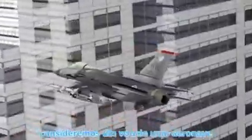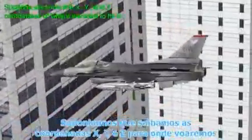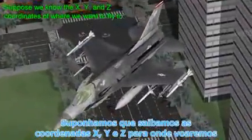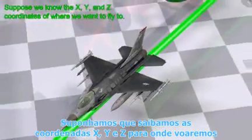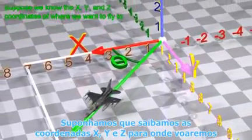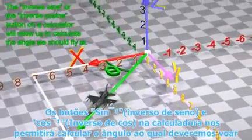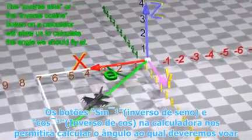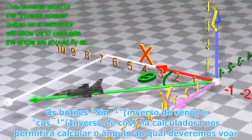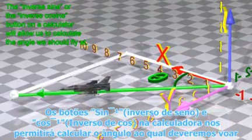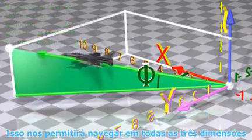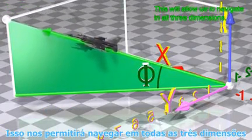Consider flying an aircraft. Suppose we know the X, Y, and Z coordinates of where we want to fly to. The inverse sine, or the inverse cosine button on a calculator, will allow us to calculate the angle we should fly at. This will allow us to navigate in all three dimensions.